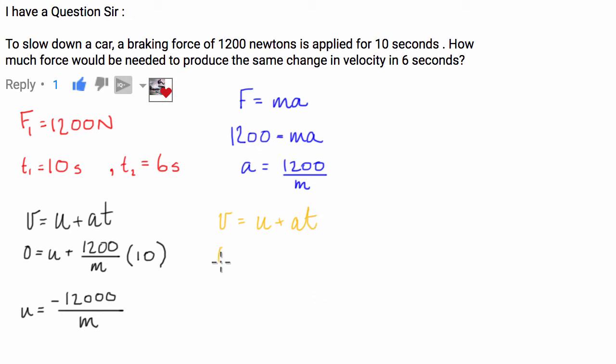So we know that we're going to finish at zero. We're going to start from the same point, so negative 12,000 over M.